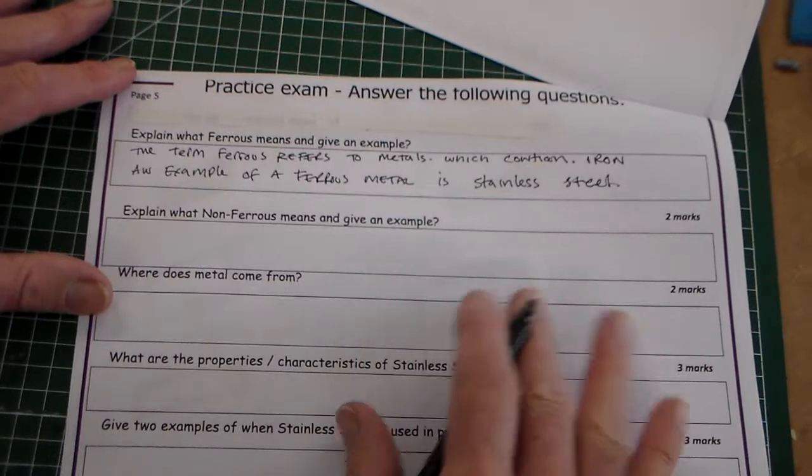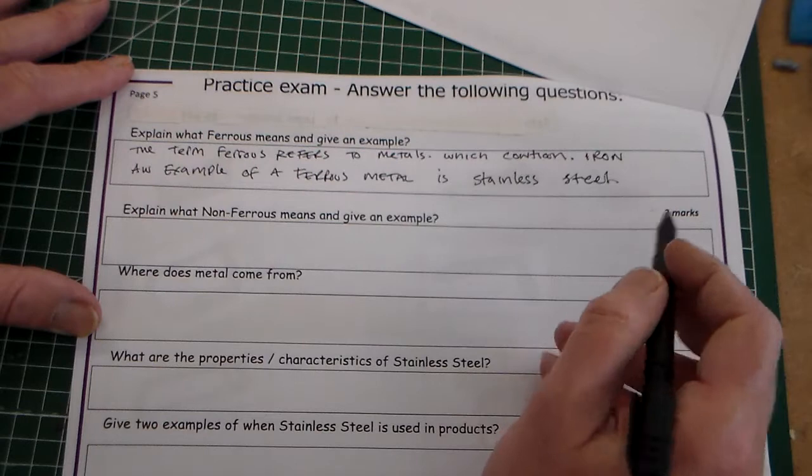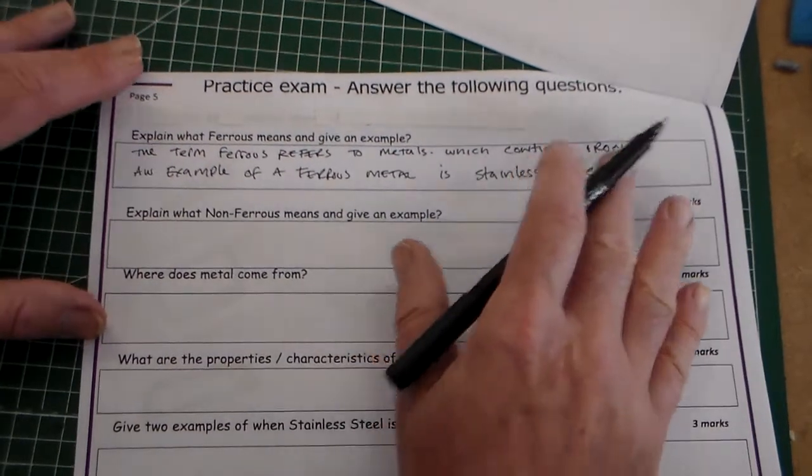So metals that contain iron are ferrous metals. An example of a ferrous metal is stainless steel. Two marks. It's quite simple.